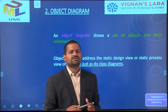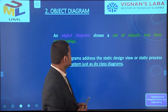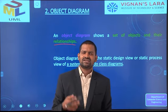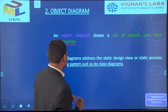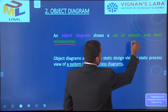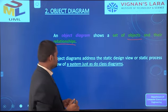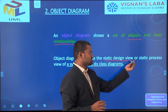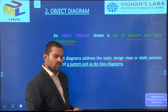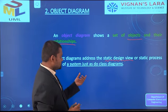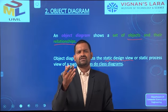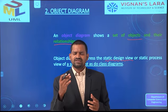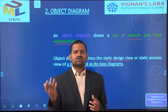The second static diagram is the object diagram. An object diagram shows a set of objects and their relationships, containing collaborations and links. It addresses the static design or static process view of the system, similar to the class diagram.